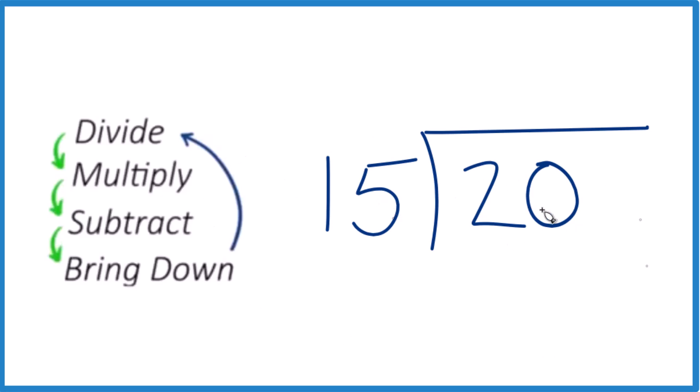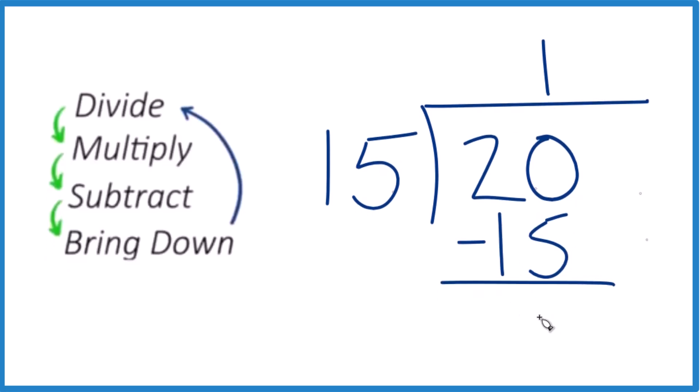So let's do this. 15 goes into 20 one time. 1 times 15 is 15. Subtract, and we're left with 5.